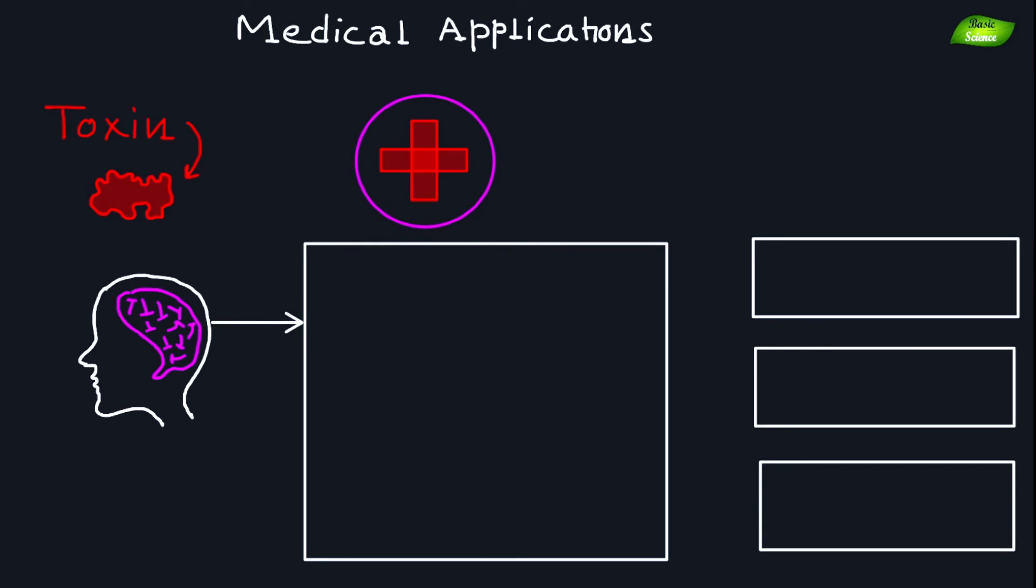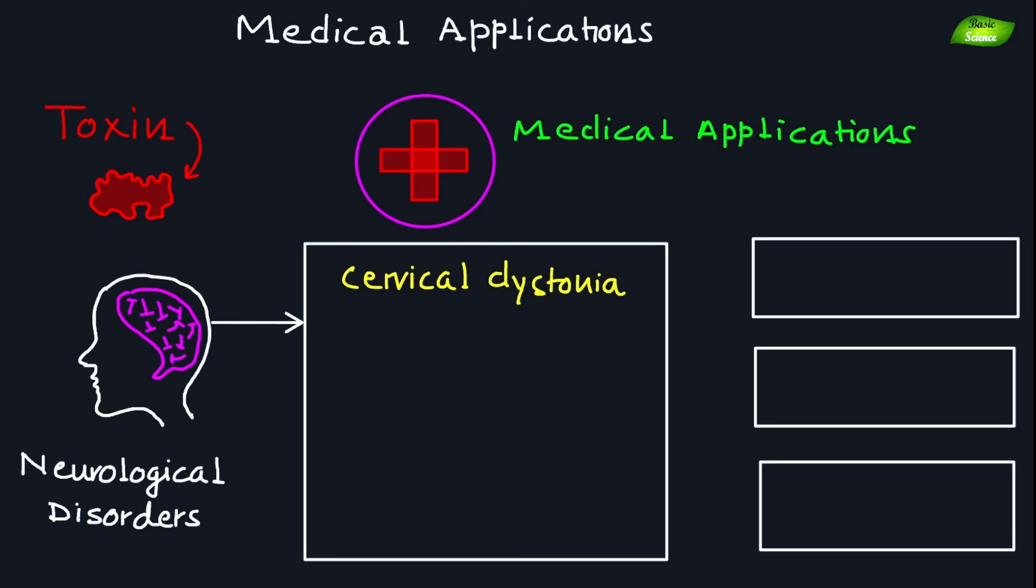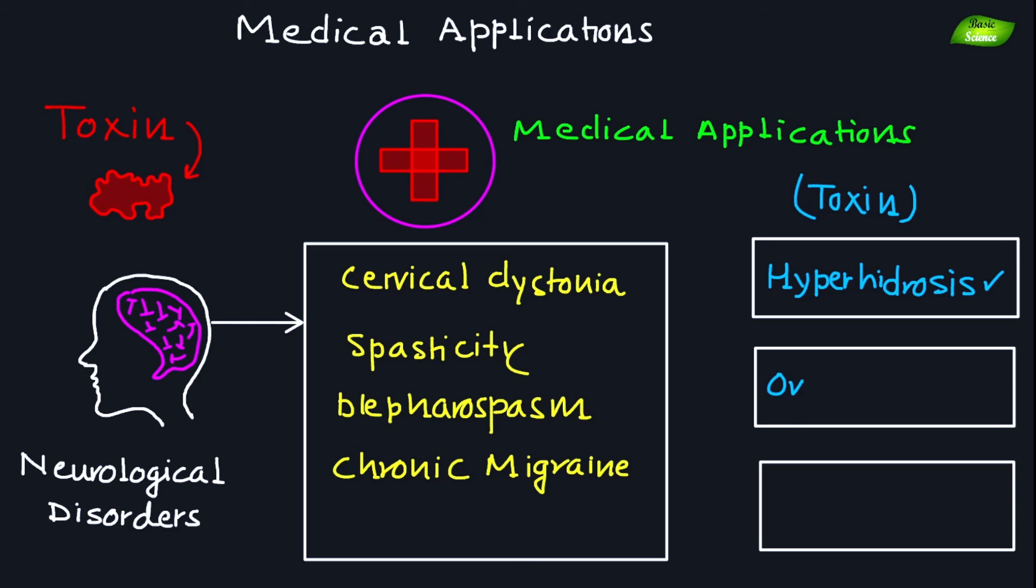Botulinum toxin has a wide range of medical applications. It is used to treat various neurological and neuromuscular disorders including cervical dystonia, spasticity, blepharospasm, and chronic migraine. Additionally, botulinum toxin has been investigated as a potential treatment for hyperhidrosis (excessive sweating), overactive bladder, and even depression.